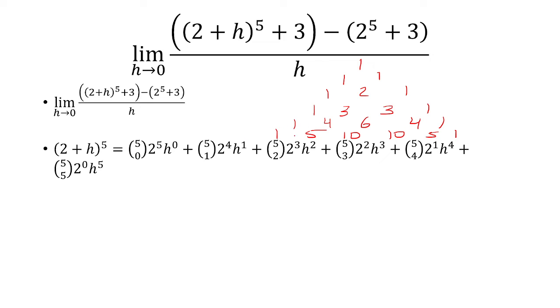So these are going to be the coefficients of the combinations. So this is 1, this is 5, then we go down to 10, and then 10 again, and then 5, and then lastly 1.